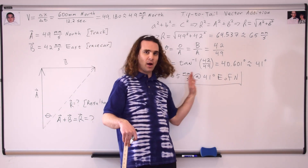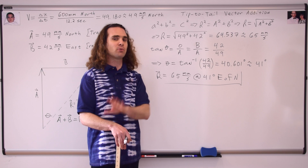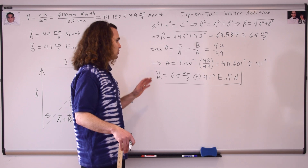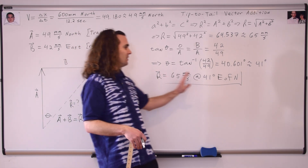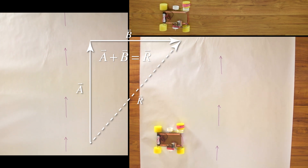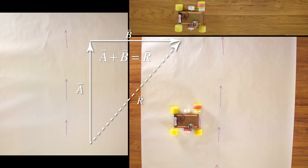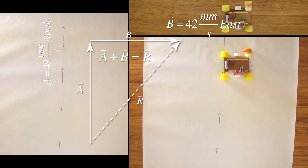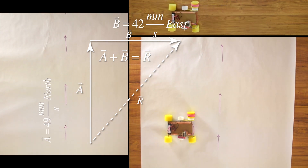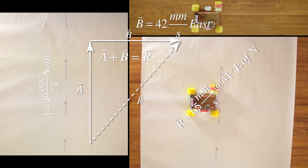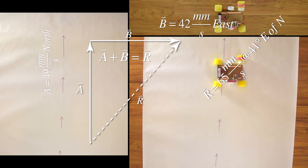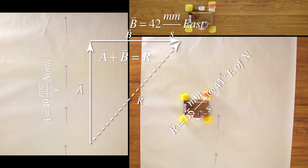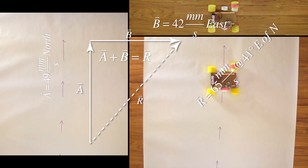Many of you won't understand where east of north comes from, and that's absolutely okay at this point. I'm going to go through, in our next lesson, how to work with cardinal directions in physics. Let's review what this means: when slow velocity racer races at 42 millimeters per second east on a track that is moving at 49 millimeters per second north, she will actually be traveling at 65 millimeters per second at an angle of 41 degrees east of north, because 49 mm/s north plus 42 mm/s east equals 65 mm/s at 41 degrees east of north.